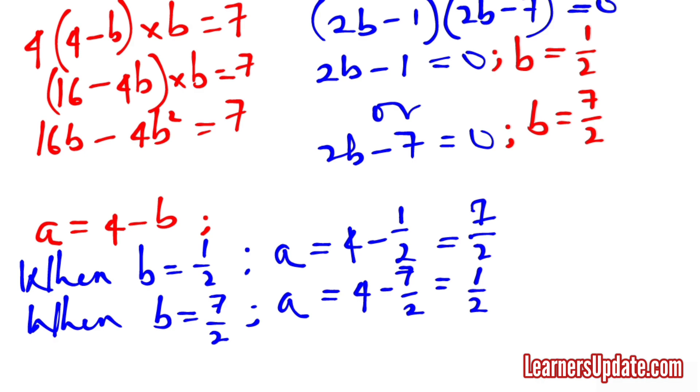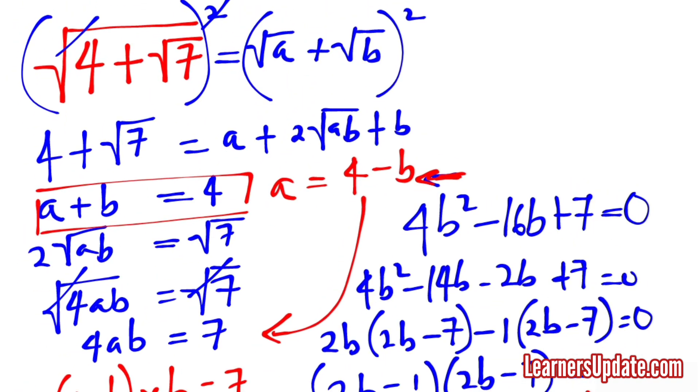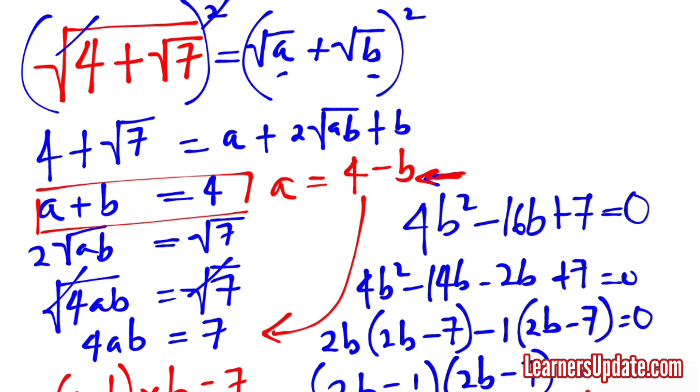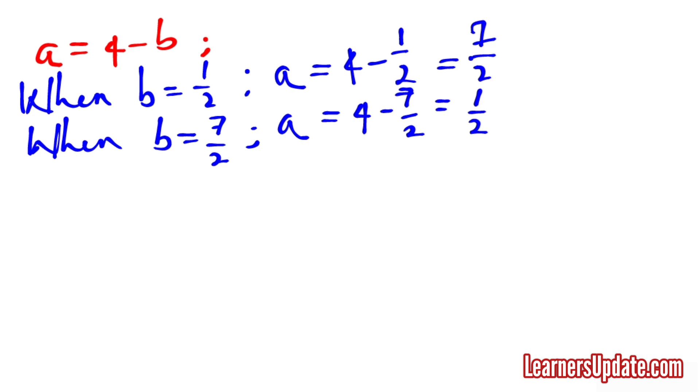So we just go back to where we started from. Originally we wanted to get A and B and now we've done that. We can now conclude that the square root of 4 plus the square root of 7 is simply the square root of 7 over 2 plus the square root of 1 over 2. Remember to like this video, share with your friends, and subscribe to my YouTube channel. Thank you.